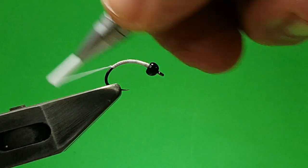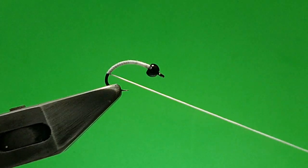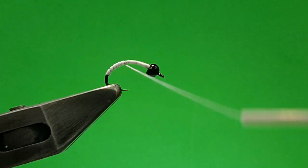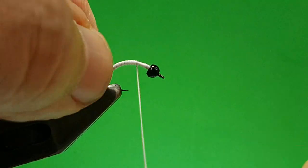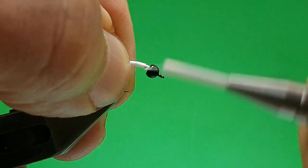So just spin the thread, the uni stretch away from you to keep it nice and thin. This is really, it's not so much to make a body, it's more to just cover the hook up, but you do get a slight taper.